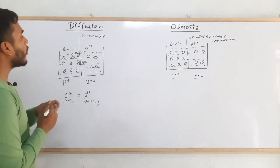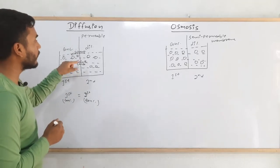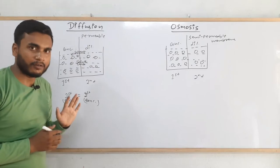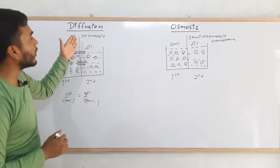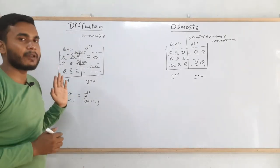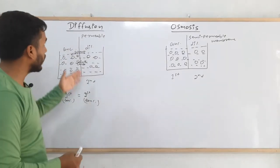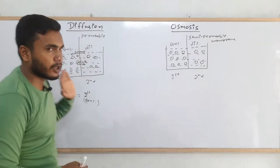The flow of solute from a higher concentrated region to a lower concentrated region through a permeable or semi-permeable membrane is called diffusion.